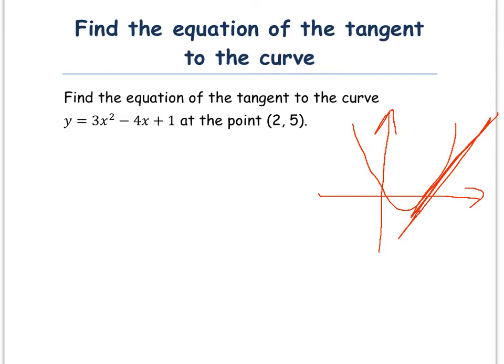To do this, you should remember from earlier videos that to find the gradient of a tangent, you have to differentiate your equation given and then substitute a value of x. Our equation: find the equation of the tangent to the curve y = 3x² - 4x + 1 at the point (2, 5).